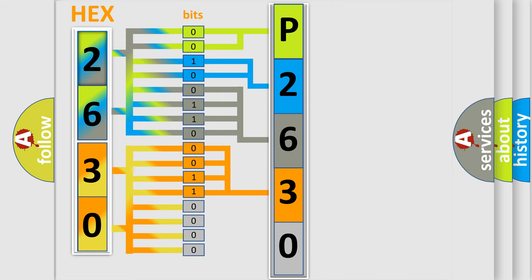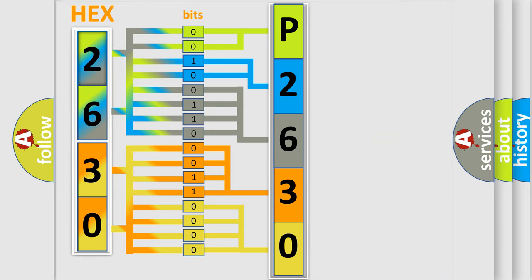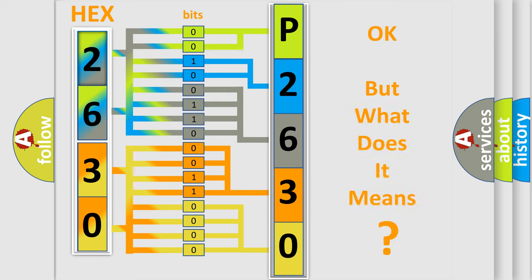A single byte conceals 256 possible combinations. We now know in what way the diagnostic tool translates the received information into a more comprehensible format. The number itself does not make sense to us if we cannot assign information about what it actually expresses.